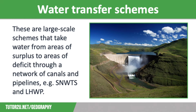Our second strategy to increase water supply is water transfer schemes. These are schemes that take water from areas of surplus to areas of deficit through a network of canals and pipelines, on a much larger scale than diversion and storage projects. An example is China's south-north water transfer scheme, which moves huge amounts of water from the humid south to the arid north.